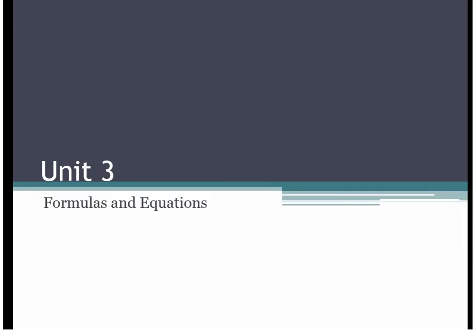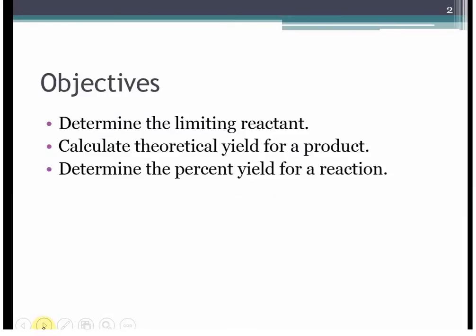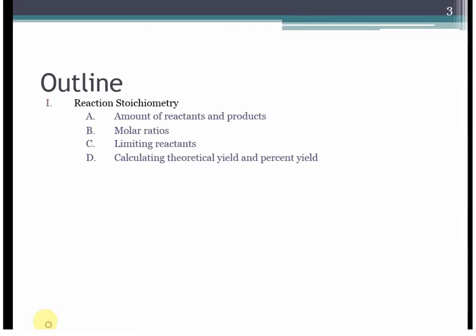This is the fifth and final video for Unit 3. This time we're going to be focusing on reaction stoichiometry. We're going to use balanced equations to look at what the yield of a reaction should be in theory — the theoretical yield — as well as the limiting reactant and the excess reactant. Then we'll look at how efficient a process is by calculating the percent yield. We'll see how coefficients come into play when calculating grams of reactants or products.